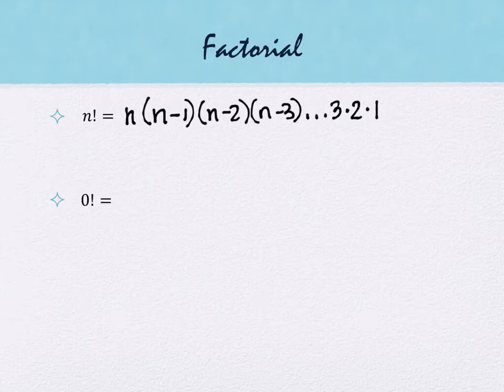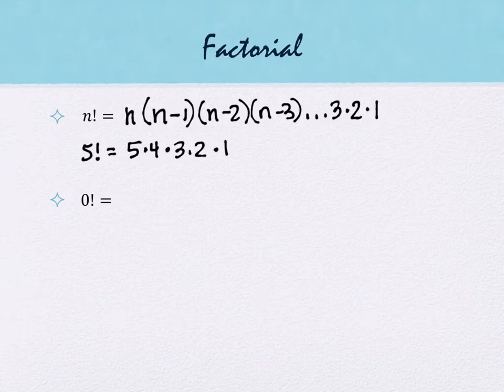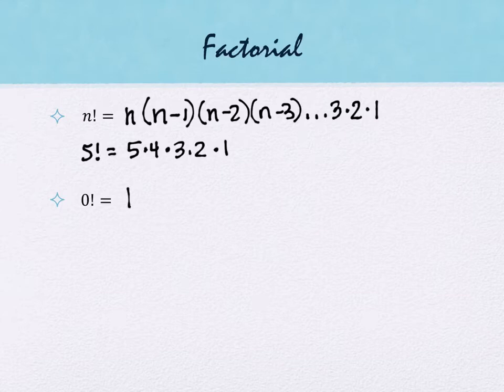If it said five factorial, it would mean five times four times three times two times one. If it says 100 factorial, you do 100 times 99 times 98 all the way down to times one. Zero factorial is one — it doesn't follow the same definition as n factorial where n is greater than or equal to one. This applies when n is a whole number, specifically a natural number.